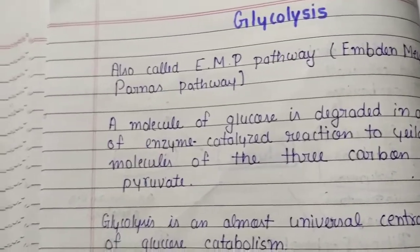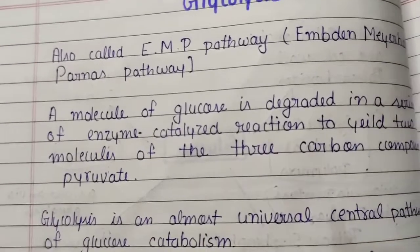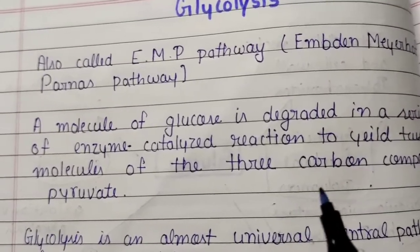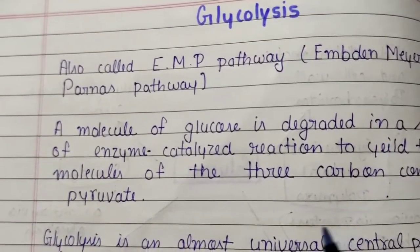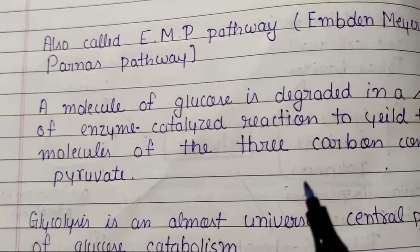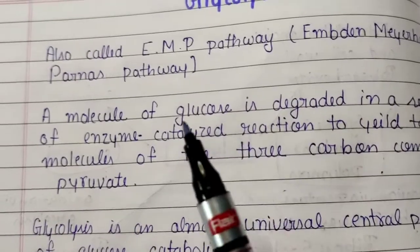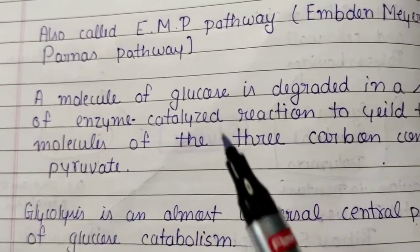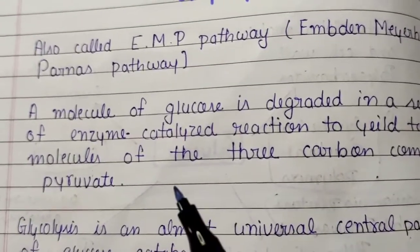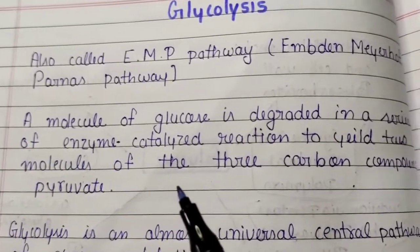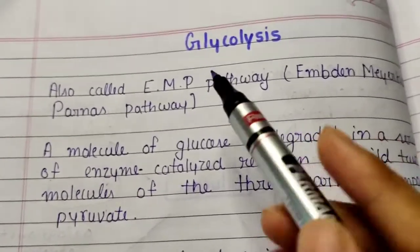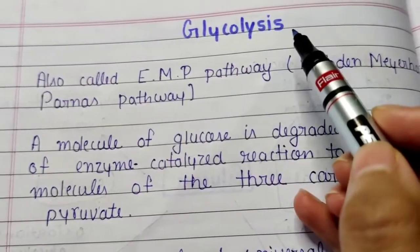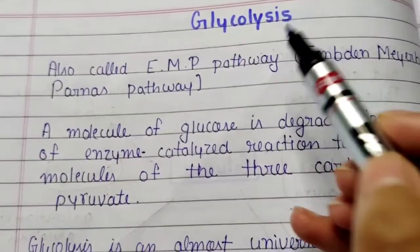Today's topic is glycolysis, also called the EMP pathway — the Embden-Meyerhof-Parnas pathway, named after the scientists Embden, Meyerhof, and Parnas. The molecule of glucose is degraded in a series of enzyme-catalyzed reactions to yield two molecules of the three-carbon compound pyruvate. The word glycolysis can be divided into two parts: 'glyco' meaning sugar and 'lysis' meaning break — so glycolysis means sugar breakdown.